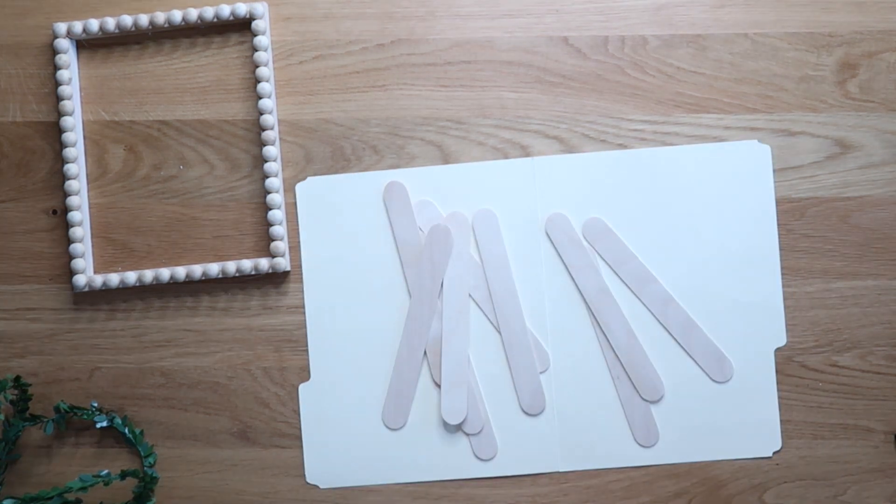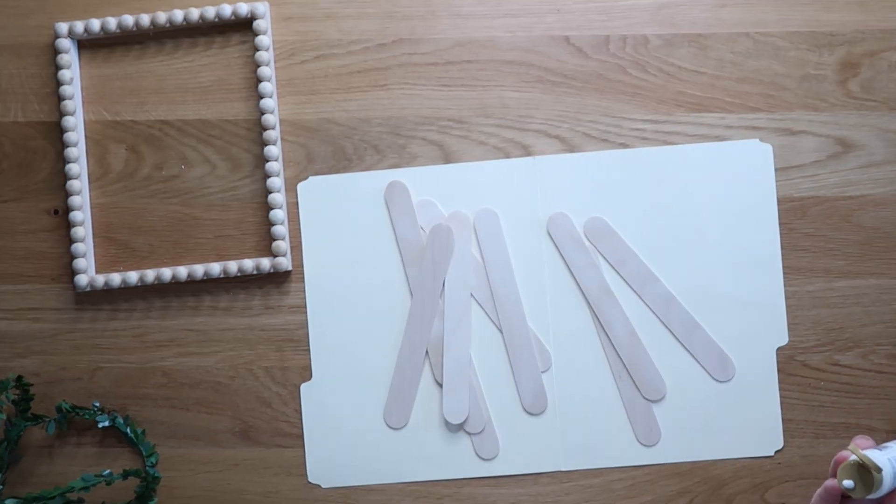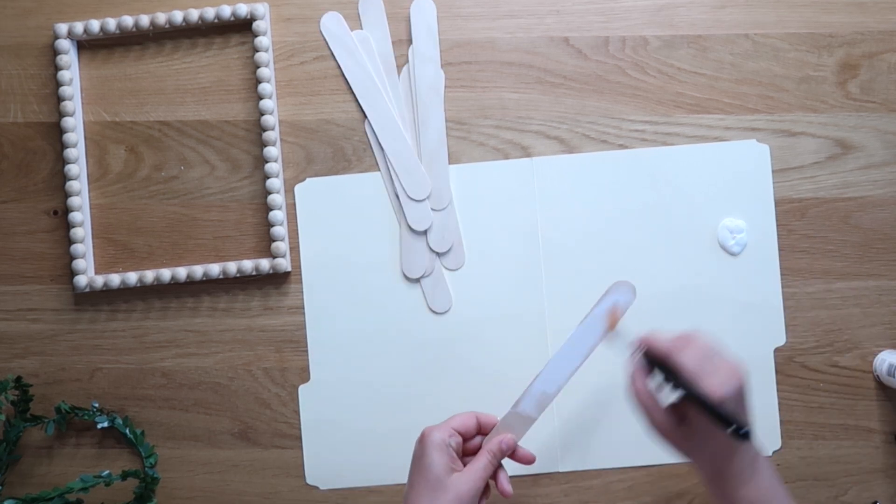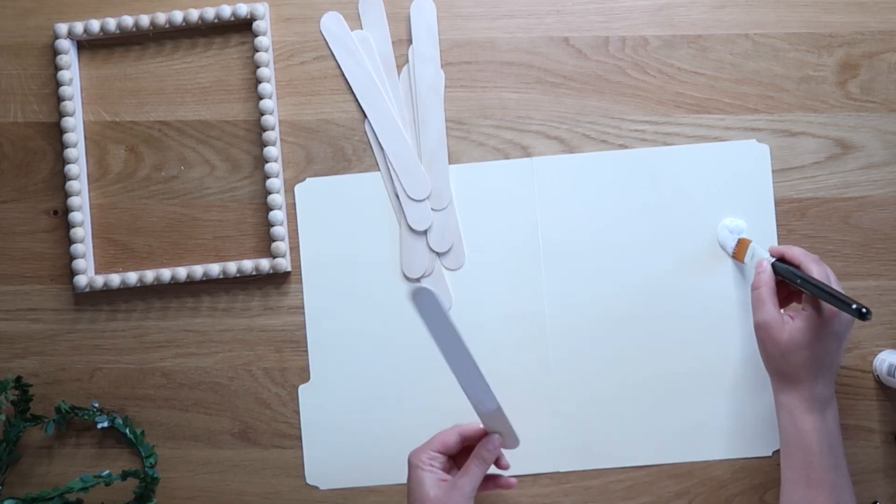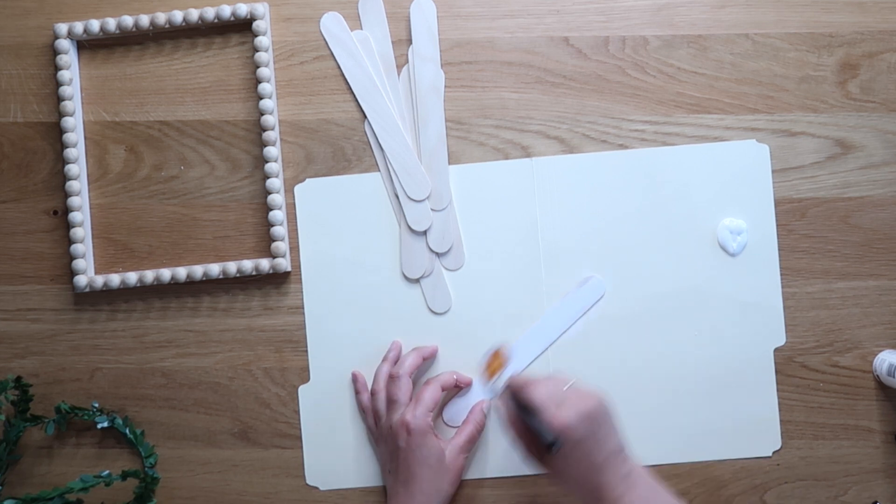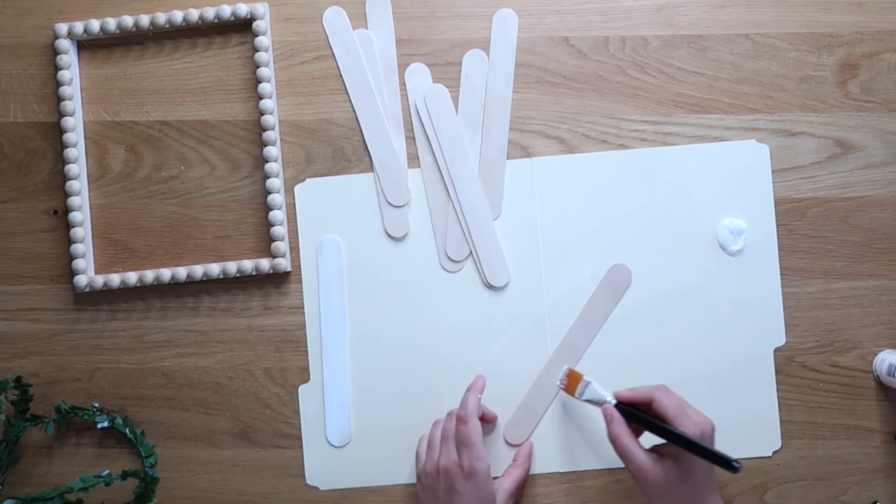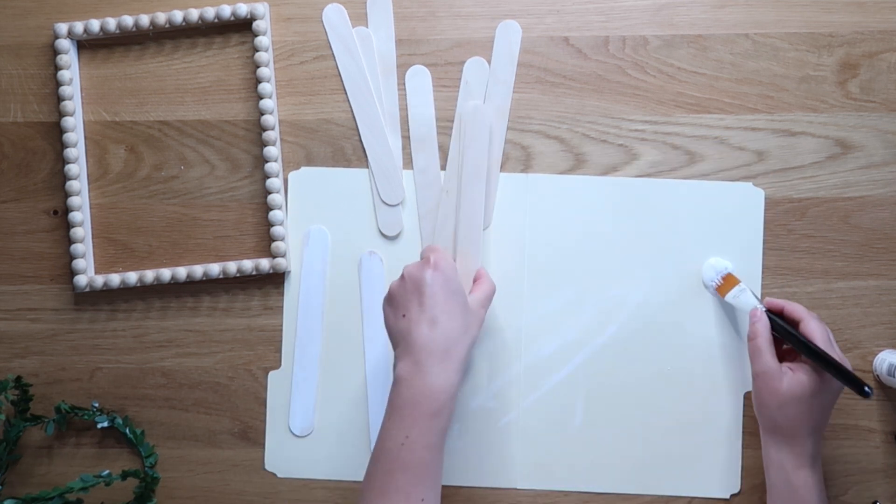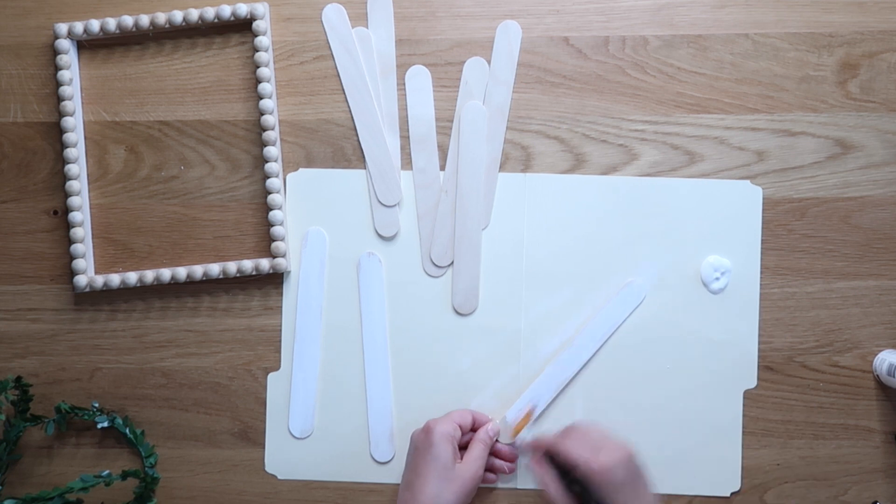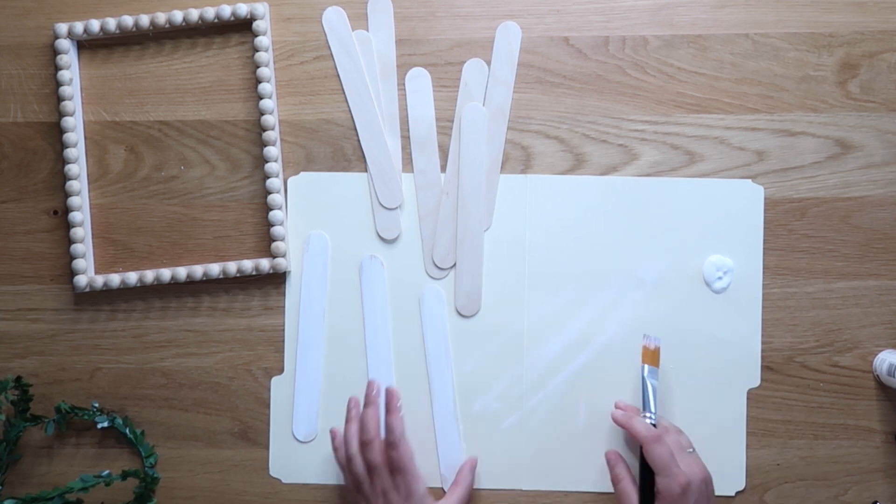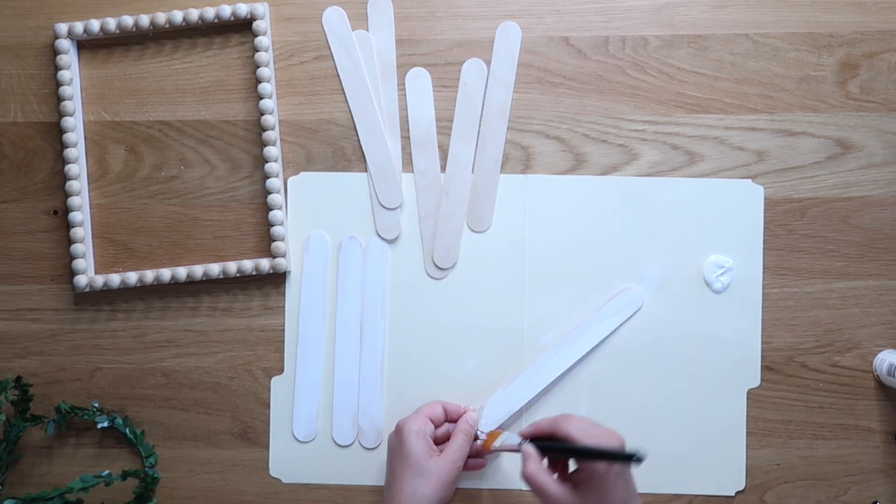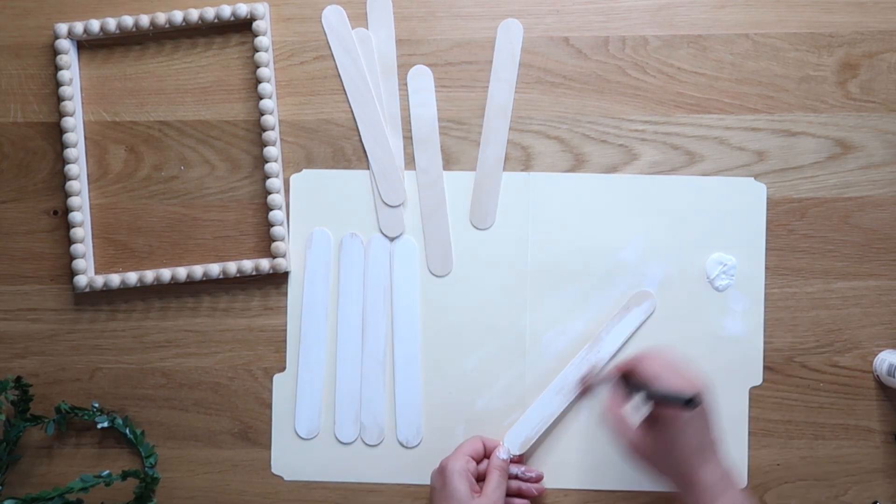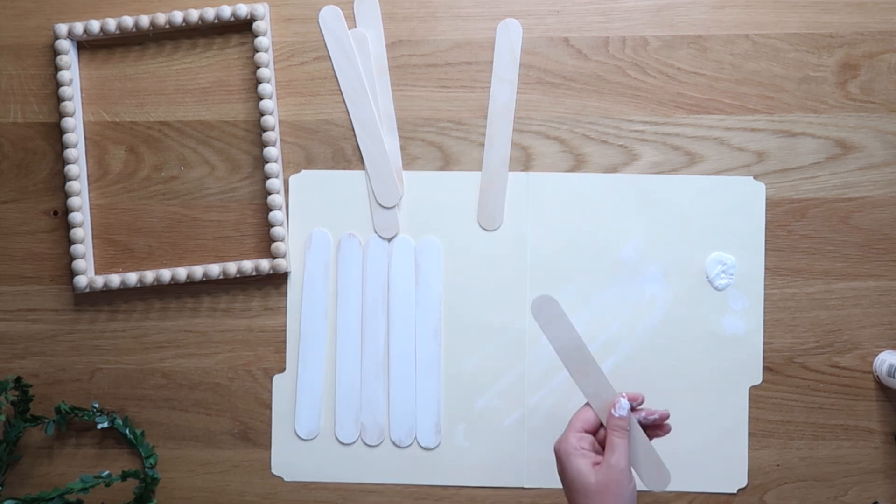And then I pulled out just some plain old white acrylic craft paint. I think this is DecoArt Americana in warm white. And you could give full coverage. I did not. I kind of let some of the wood grain show through. You can use a dry brush technique, make it as rustic or solid as you want. But just give everything a quick coat of paint. And the nice thing with this unfinished wood is that the paint soaks in quickly, and everything dries super fast.